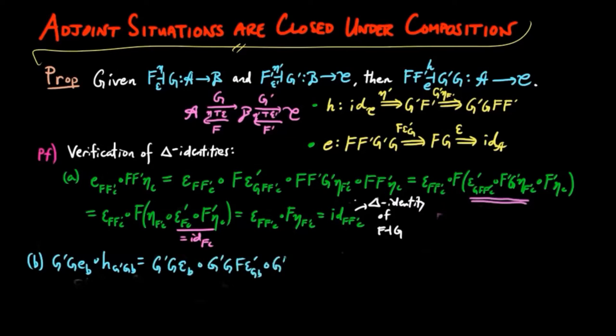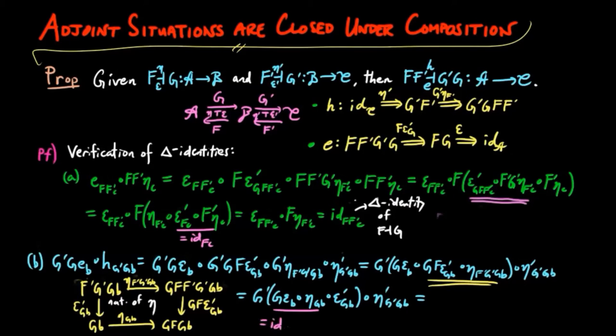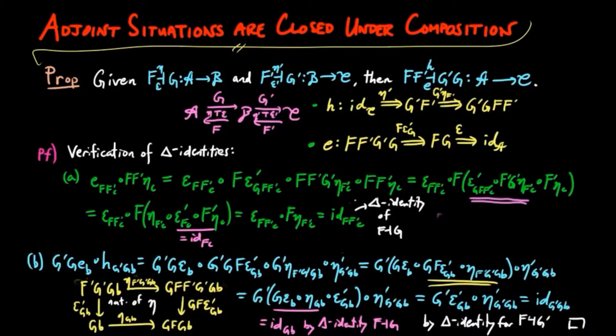The other triangle identity is verified in the same way, but this time we use the naturality of eta in the crucial step. So we can see that F F prime G prime G is an adjoint situation with the unit and counit as defined above.